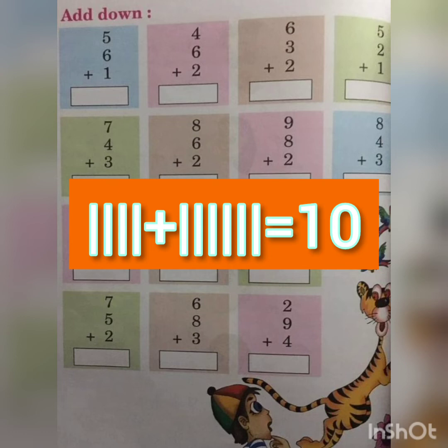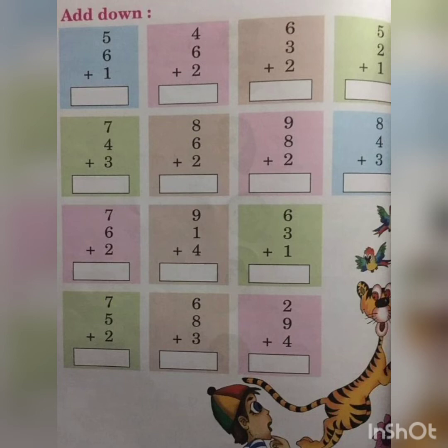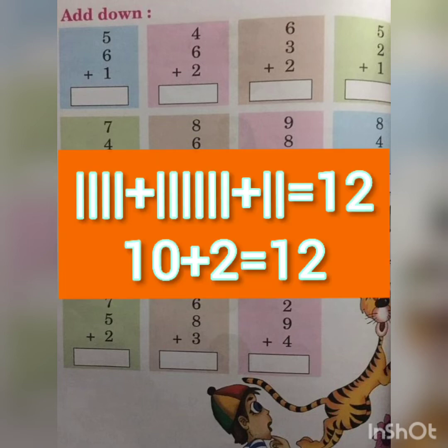So if you add them together, you get the number 10. So after you get the number 10, you will draw two more lines. Since the question is 4 plus 6 plus 2, the answer is 12. 4 plus 6 is 10 plus 2 is 12.